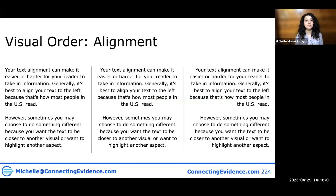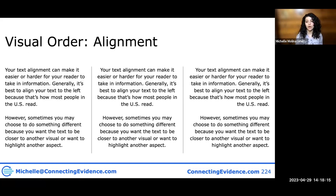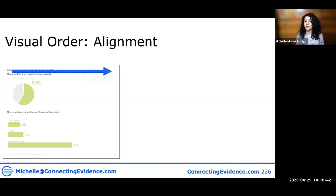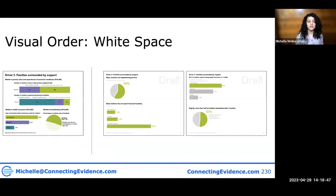Another principle to keep in mind is visual order, and one aspect of that is alignment. In Western cultures like the U.S. and Europe, we read from left to right, while other cultures read from right to left. So think about the culture you're working with when considering how they'll take in information. When scanning through documents, this is how our brains look at things — so whenever possible, put the key information on the left-hand side.